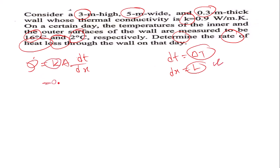So k is 0.9, and A equals 3 into 5. The temperature difference is 16 minus 2, divided by 0.3. That means the answer will be 630 watts.